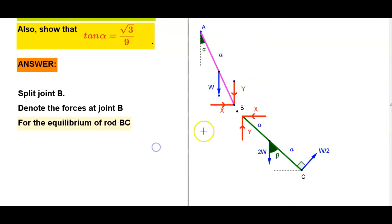For the equilibrium of rod BC, take a moment about point B. Therefore two forces W/2 to possess opposite direction to each other. W/2 at distance 2a from point B.